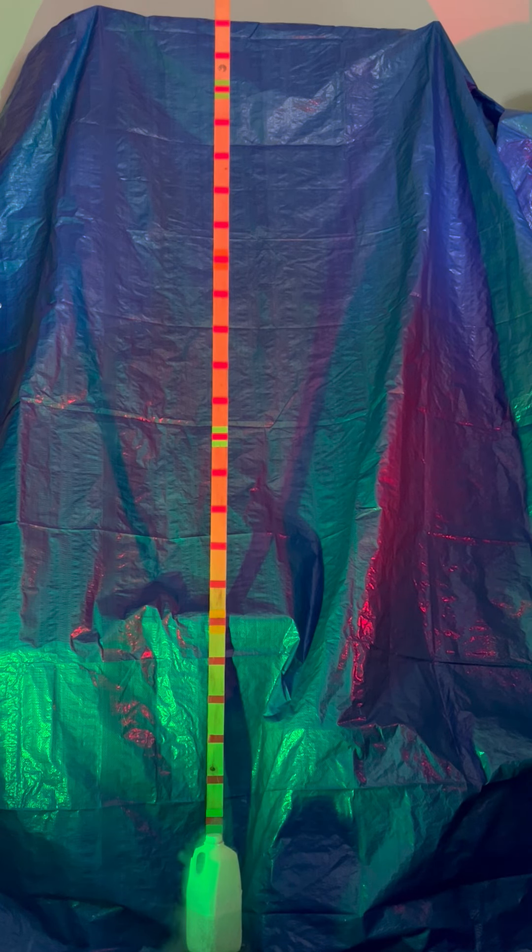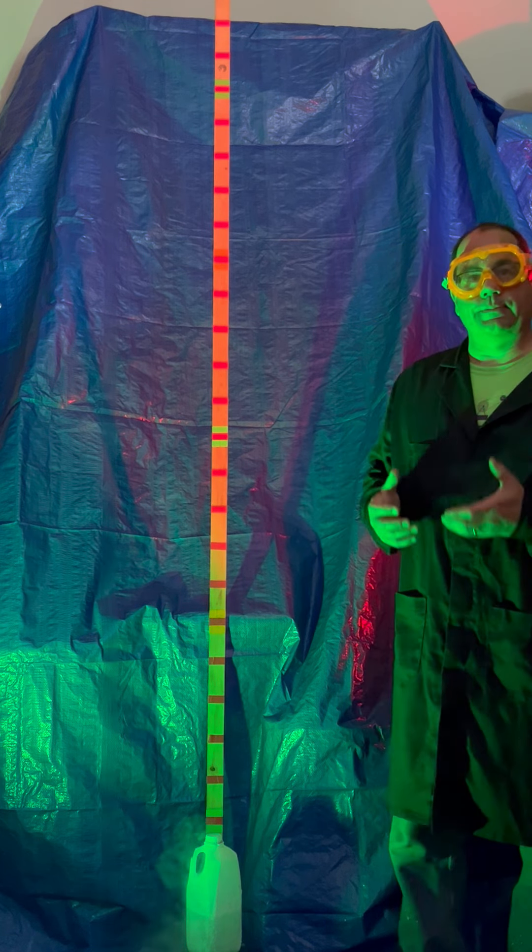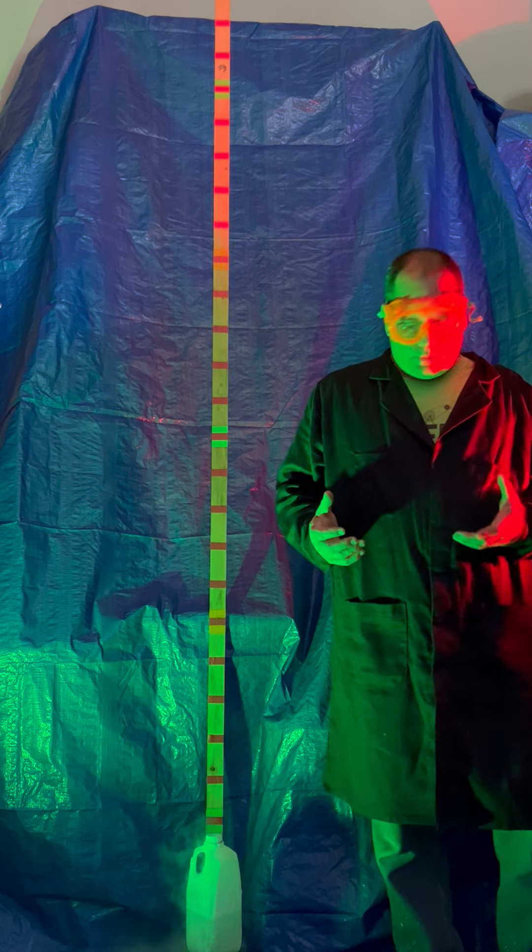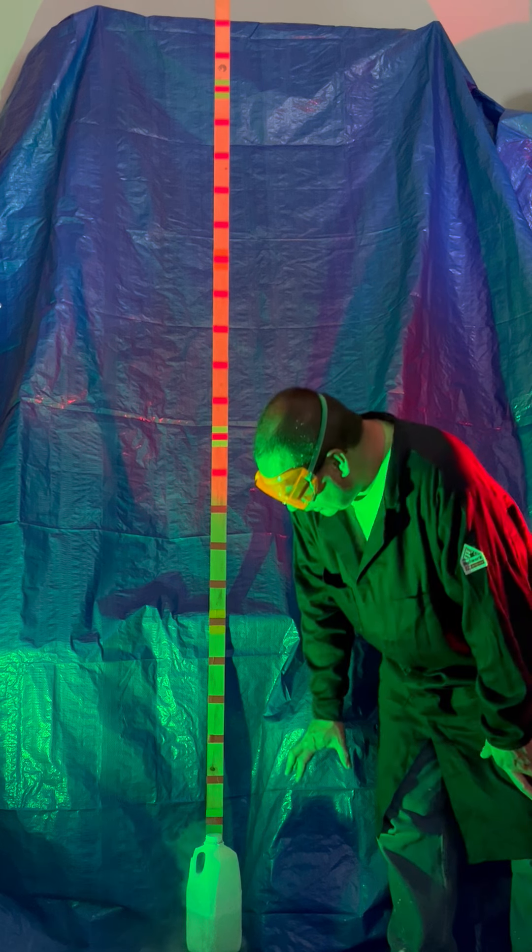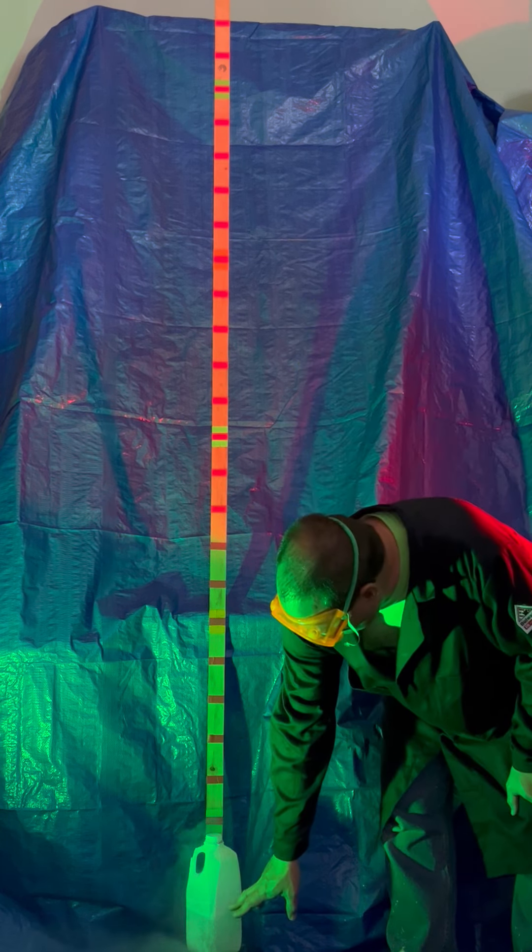This video shows how surface area impacts the rate at which a process occurs. What I have here is a half gallon container filled with a little bit of liquid nitrogen.